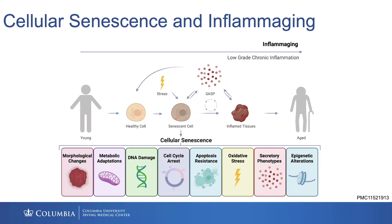That's great — maybe you prevented a damaged or stressed out cell from becoming cancerous — but the cells are metabolically active and they take on a secretory phenotype, releasing soluble factors in what is known as the senescence-associated secretory phenotype, or SASP. A lot of these inflammatory factors include interleukins, chemokines, cytokines, and matrix metalloproteases.